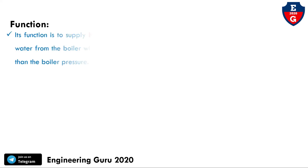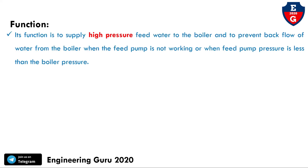The function of the feed check valve is to supply high-pressure feed water to the boiler, and to prevent back flow of water from the boiler when the feed pump is not working or when the feed pressure is less than the boiler pressure.